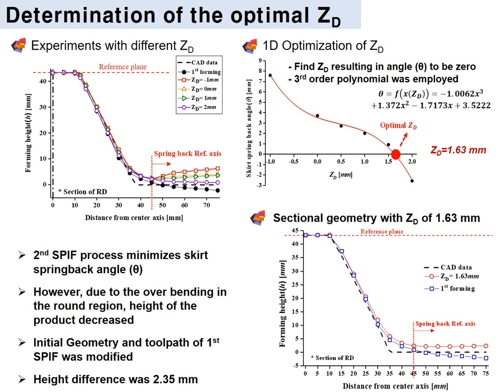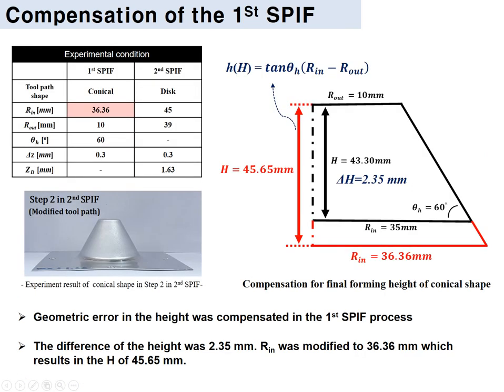An experiment was conducted with GD = 1.63 mm. As seen in the graph, the skirt angle was 0. However, there was a height difference of 2.35 mm from the CAD data. In order to compensate for this height difference, we modified the toolpath in the first incremental forming process.